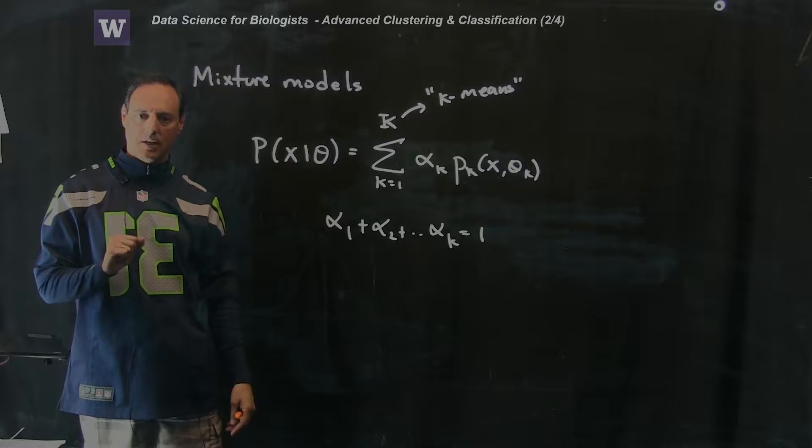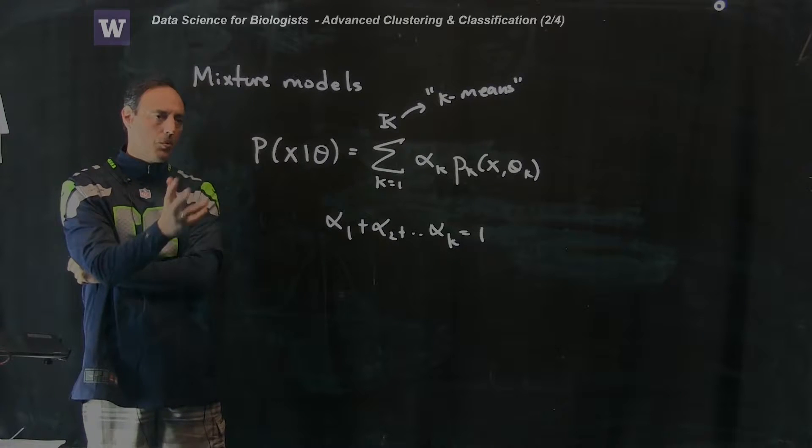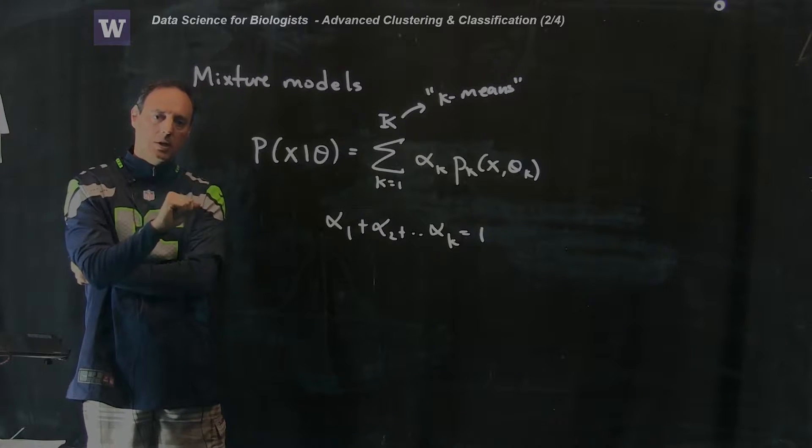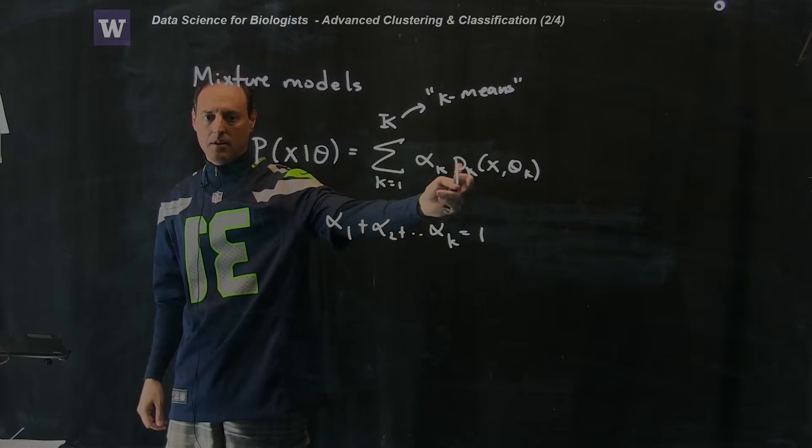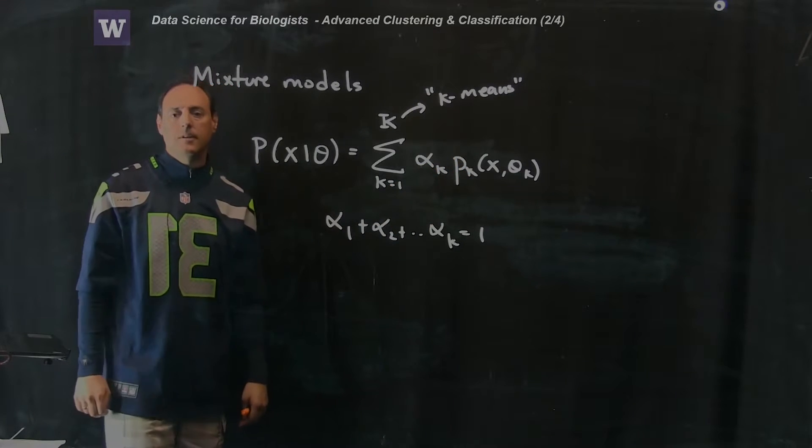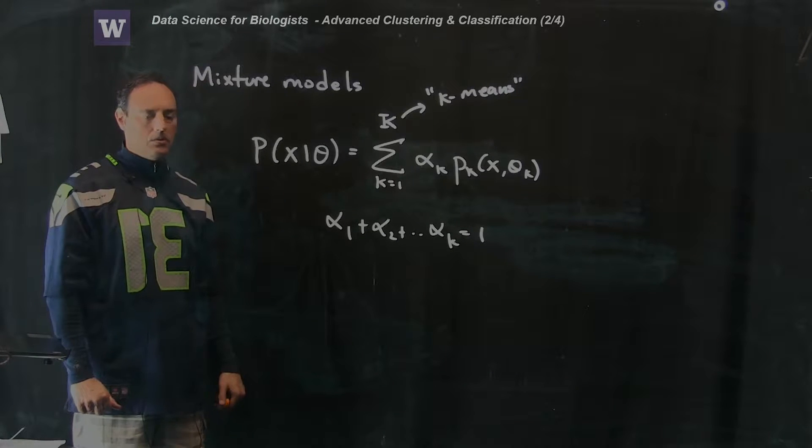So that's the main idea. It's kind of as simple as that. Mixture models do this. And what we're going to talk about in the code right now is we're going to apply Gaussian mixture models, and the Gaussian mixture models are just making an assumption that these P of Ks here are in fact just Gaussians.